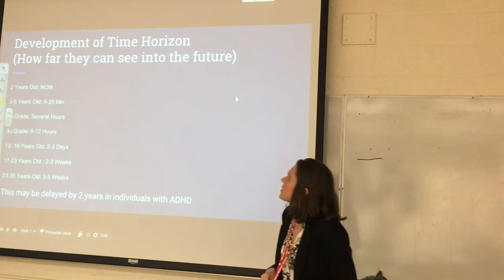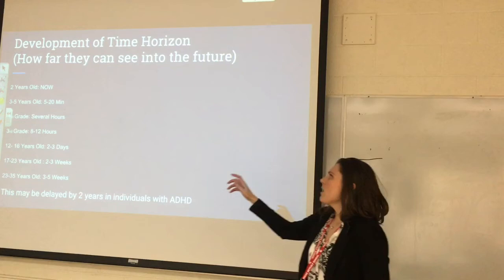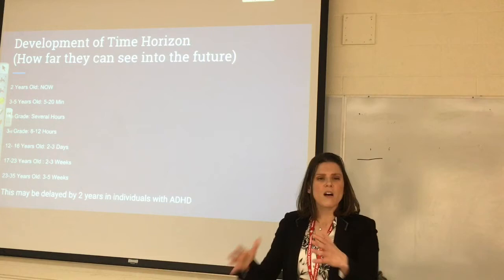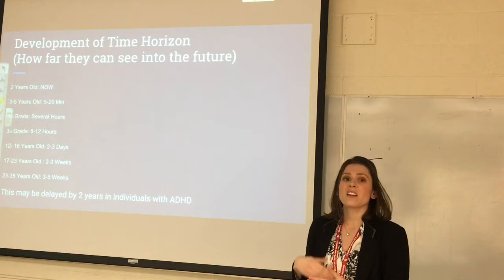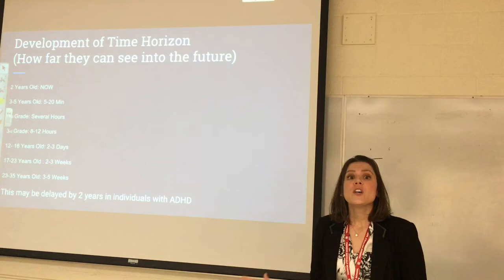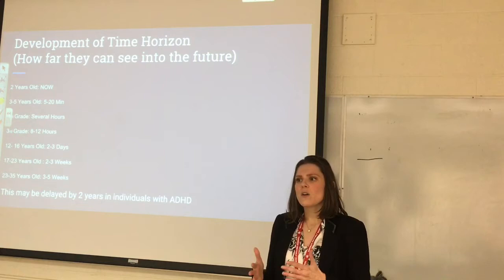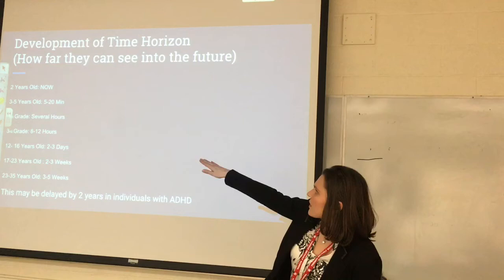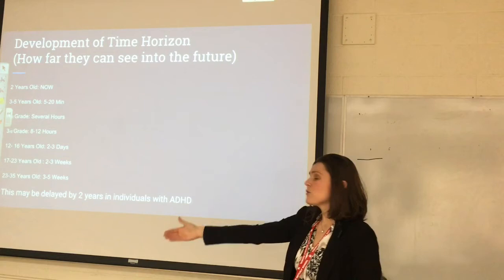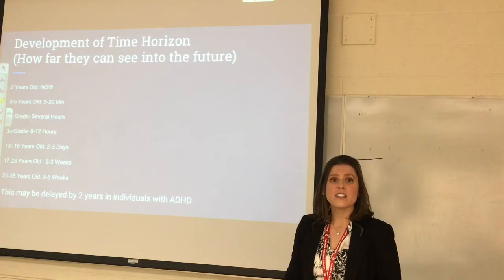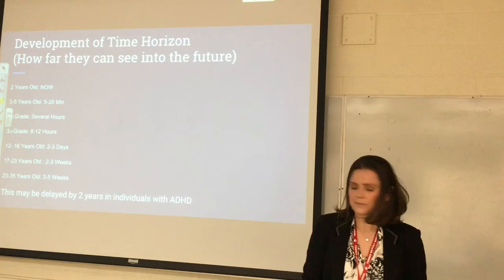Students' ability to see into the future develops with age. At two years old, it's all about the now. By age three to five, they can see five to twenty minutes ahead. By first grade, several hours ahead. Now think about your student with ADHD, who may be about two years delayed — roughly a 30% delay per research. That first-grader might only be seeing about five minutes into the future while peers can see several hours ahead.